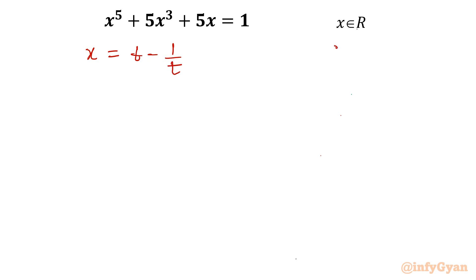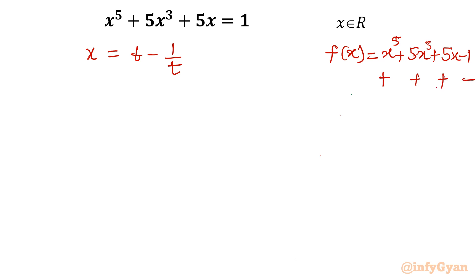If we consider the given equation as our f(x) function, we write x power 5 plus 5x cubed plus 5x minus 1. Checking the sign change using Descartes' rule: there is one sign change. For f(minus x), all signs are negative, so we can conclude there is no negative real solution and only one possible positive real solution. The remaining roots would be complex.